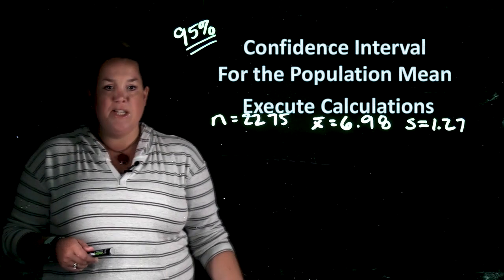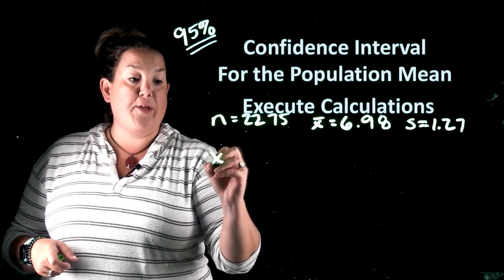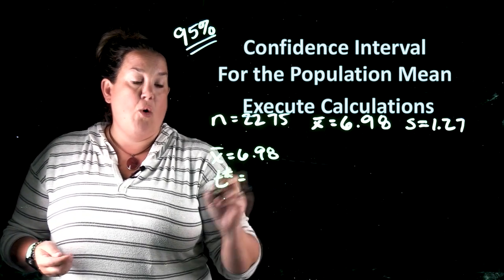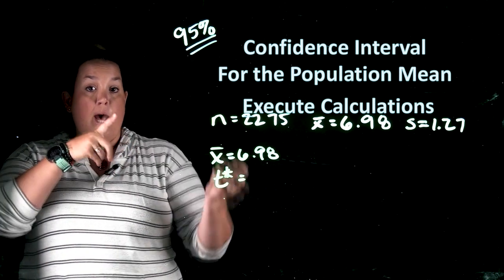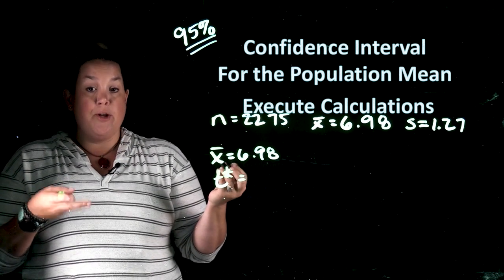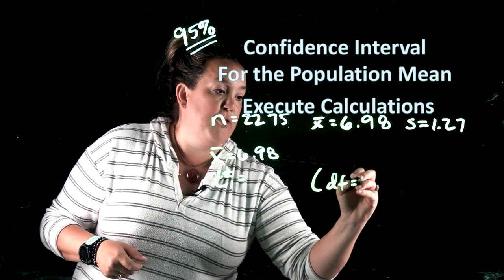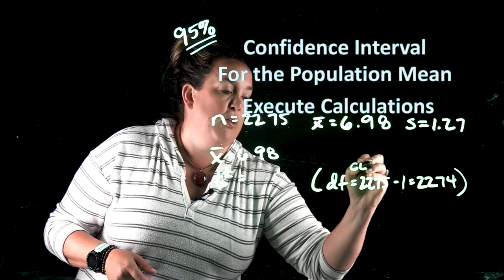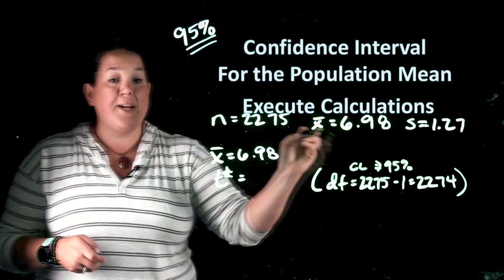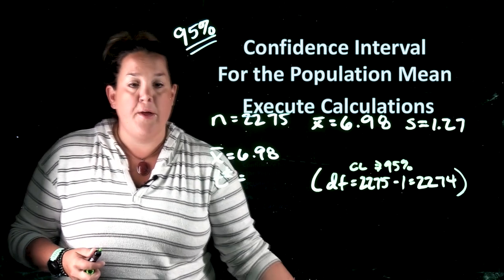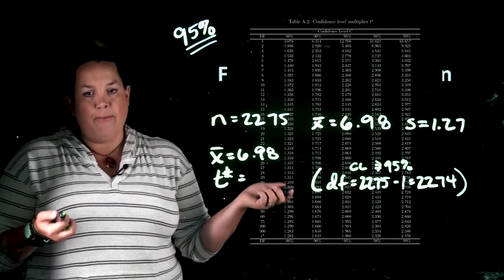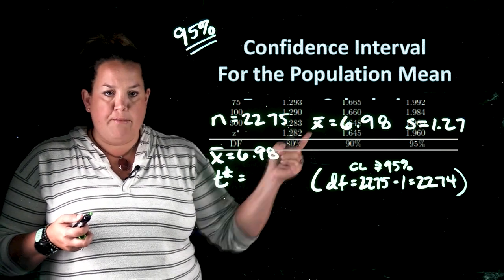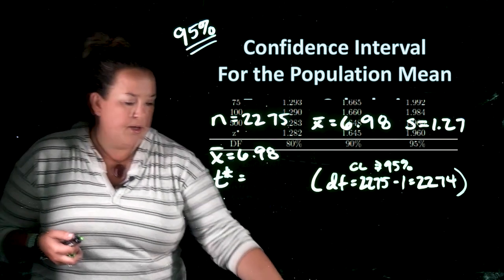We start the calculation with x-bar = 6.98, then we need the confidence level multiplier, t*. To find t* you need two things: the confidence level (95%) and the degrees of freedom, which is n minus 1 — so 2,275 minus 1 gives us 2,274 degrees of freedom. We use those two pieces of information to look up t* in the t* table available online or in the textbook.